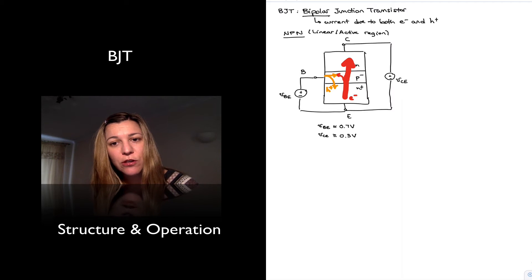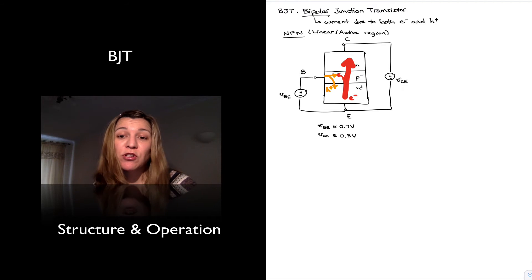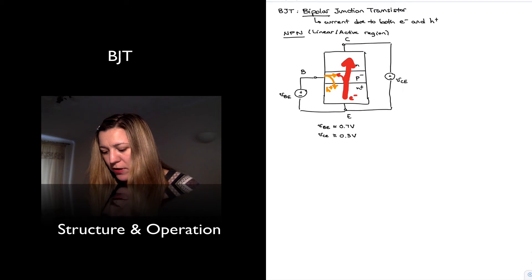By convention, the direction of current flow is the direction of flow of positive charge. And so in this case, it will be the direction of flow opposite to the direction of flow of the electrons.